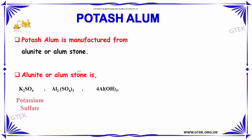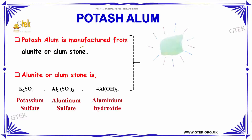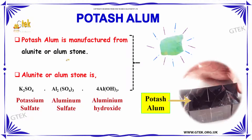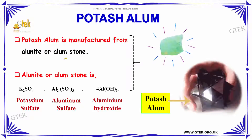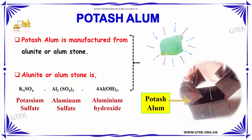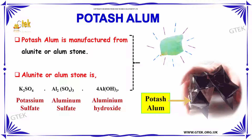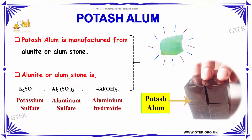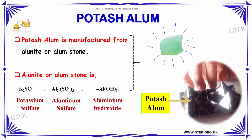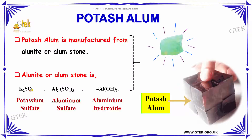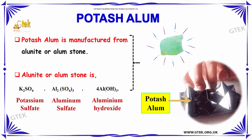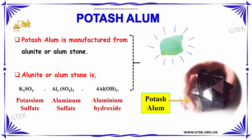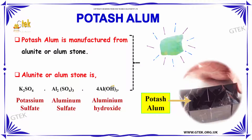What is Potash Alum? It is manufactured from Alunite or Alum Stone. Alunite or Alum Stone is a combination of Potassium Sulphate, Aluminium Sulphate and Aluminium Hydroxide.